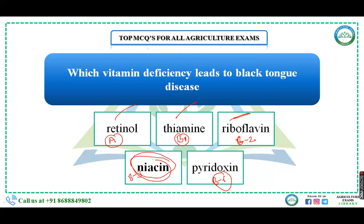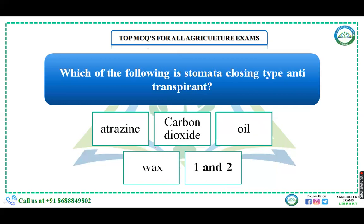Which of the following is a stomata closing type anti-transpirant? Anti-transpirants are materials applied to the plant surface to reduce transpiration. They are of various types: stomata closing type, film forming type, reflecting type, and growth retardant. The options are atrazine, carbon dioxide, wax, and white. Wax and white are film coating types. Atrazine, carbon dioxide, and phenyl mercuric acetate are stomata closing types. So the answer is options one and two.